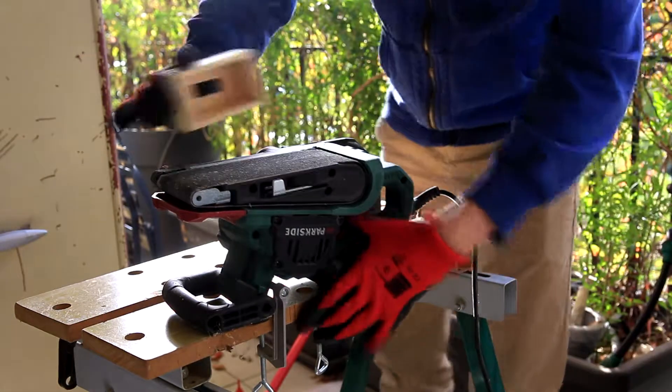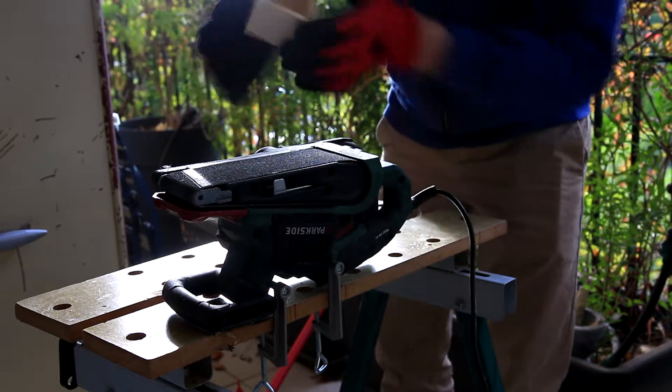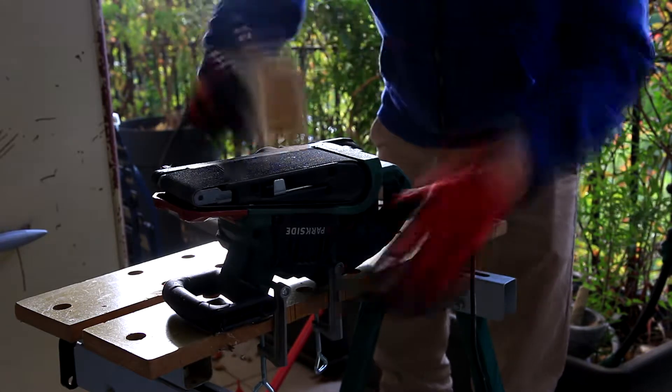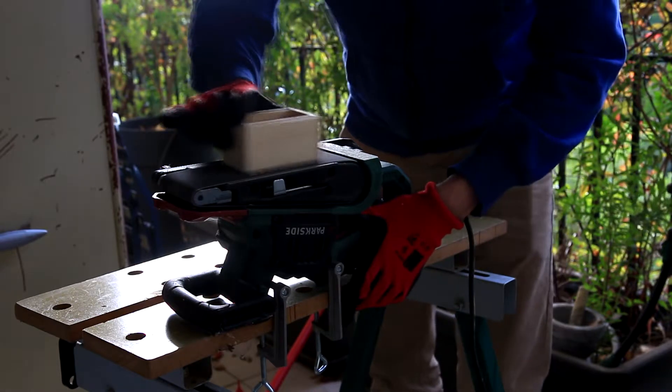I then used a belt sander in order to sand it properly with grain 80. This is clearly my favorite part because you start to see what the piece is going to look like.